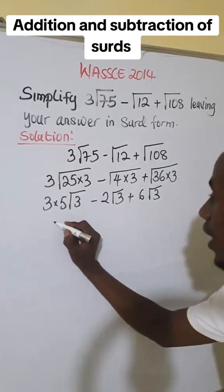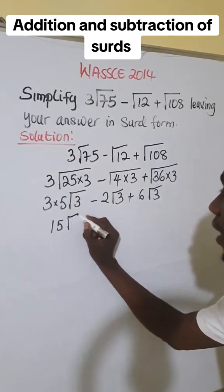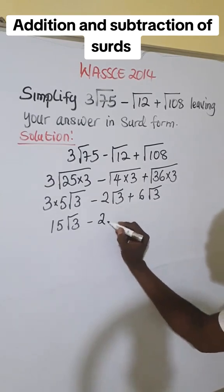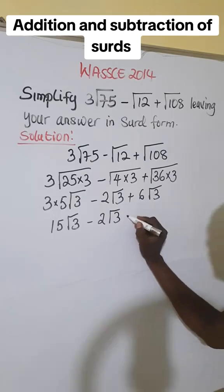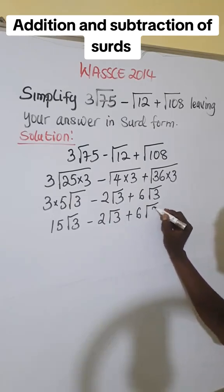Let us simplify 3 times 5 to get 15. And this is √3. So we have 15√3 - 2√3 + 6√3.